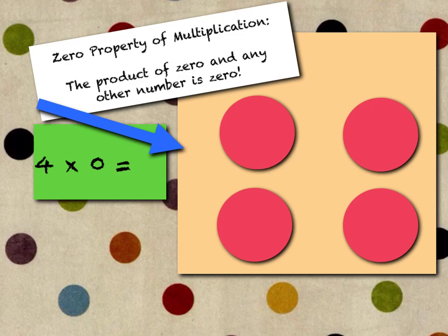Those problems all showed us different properties of multiplication. We've already talked about the commutative property, where you can turn the problem around and the order of the factors doesn't change the product. But this new property is the zero property of multiplication. The zero property states that the product of zero and any other number is still zero. So four times zero is zero. Four groups of zero — we have four groups, and zero in each group — so four times zero is zero. That is the zero property of multiplication.